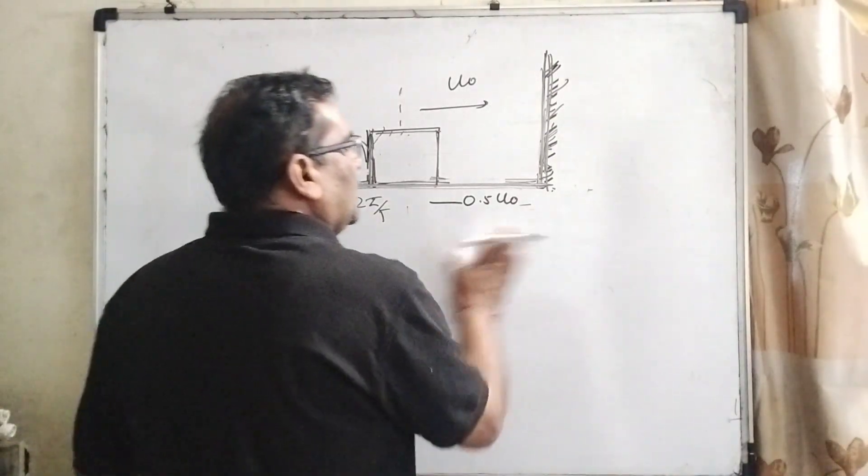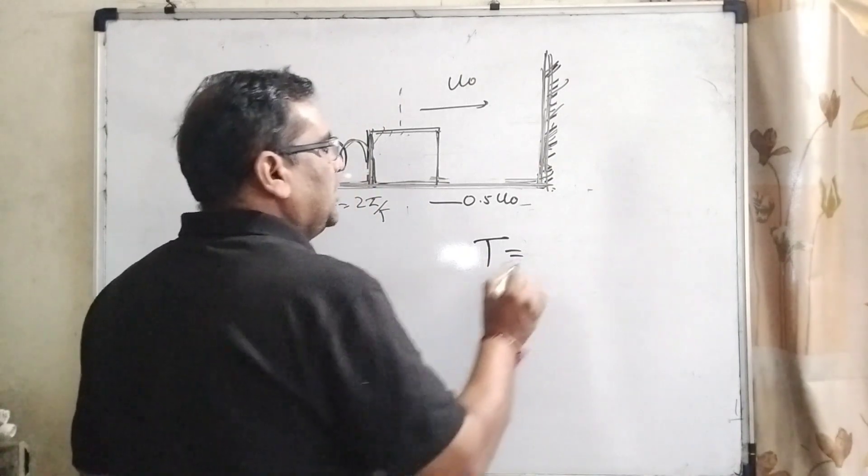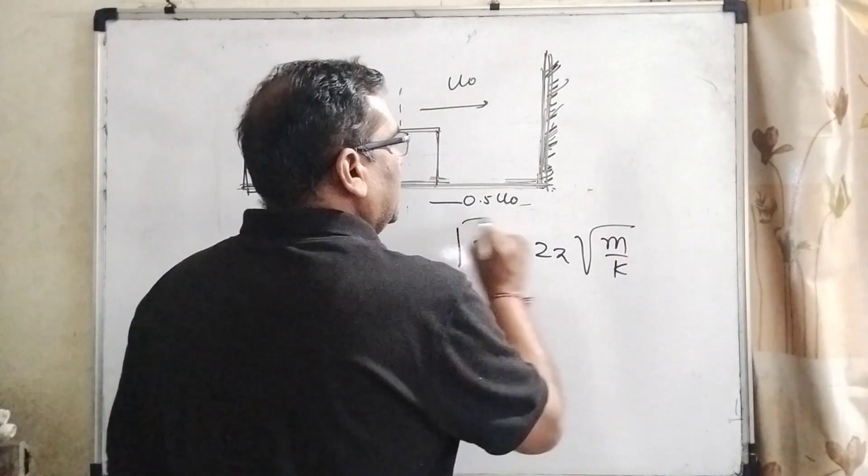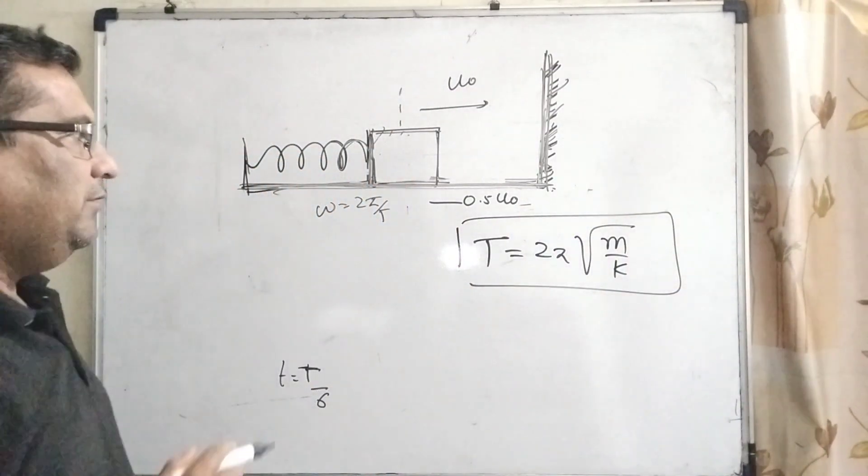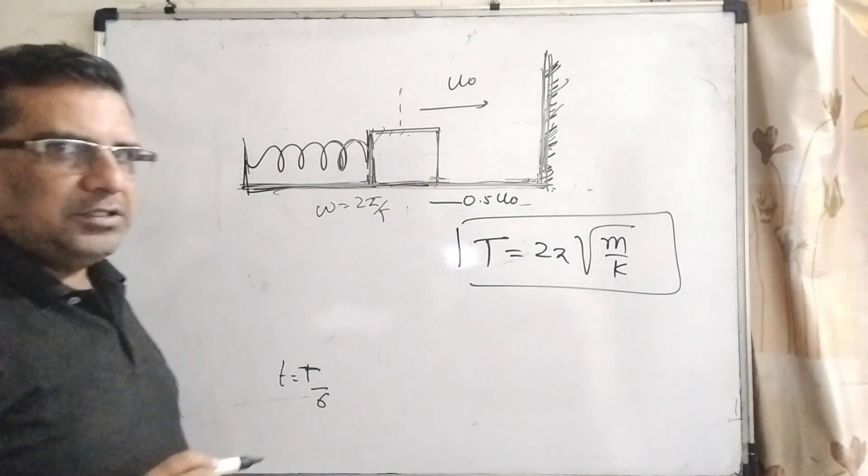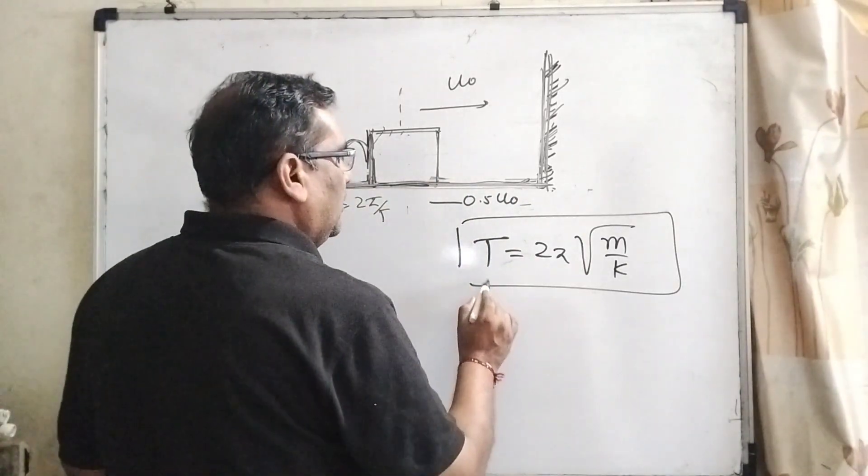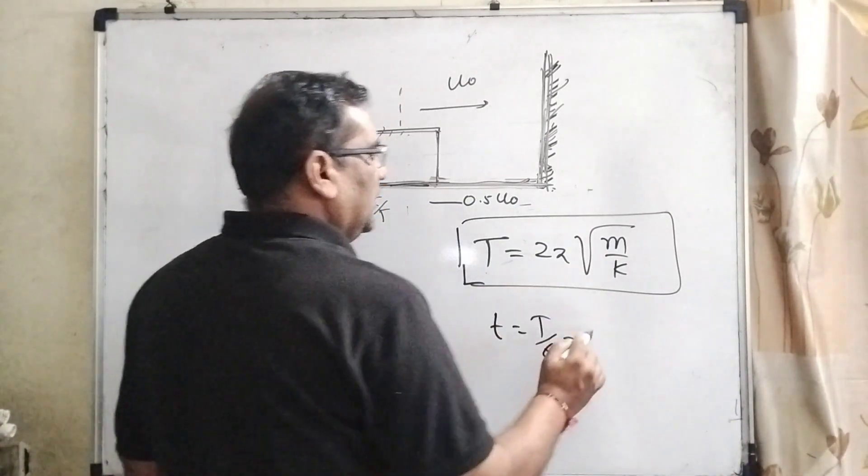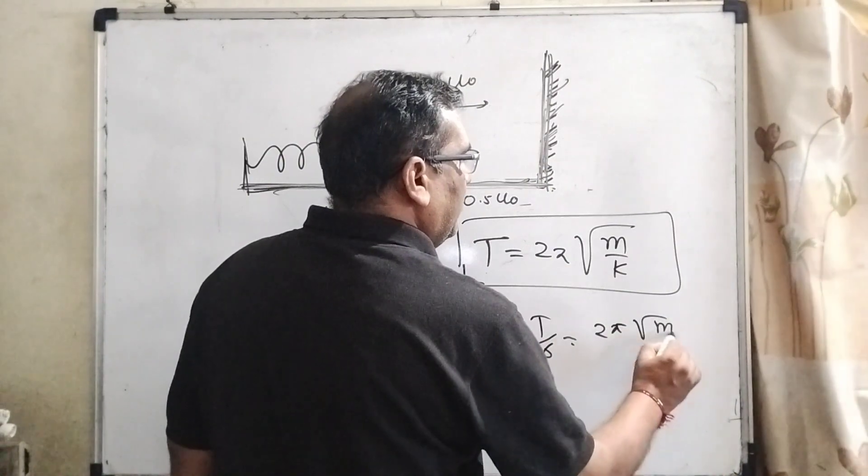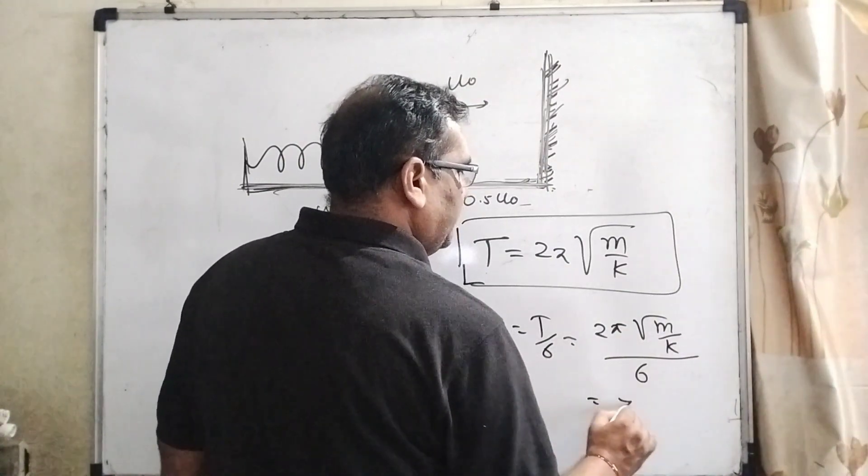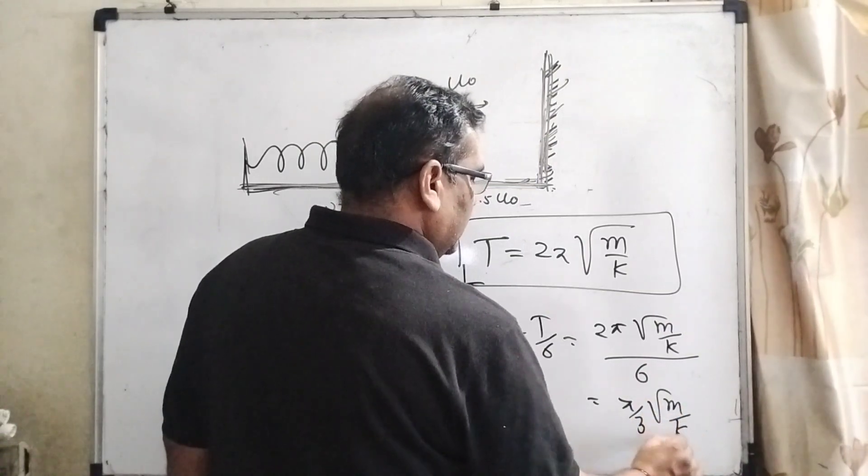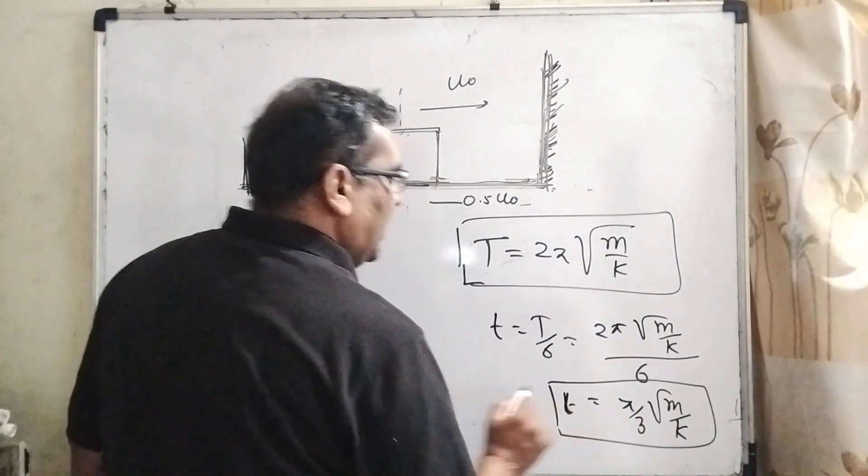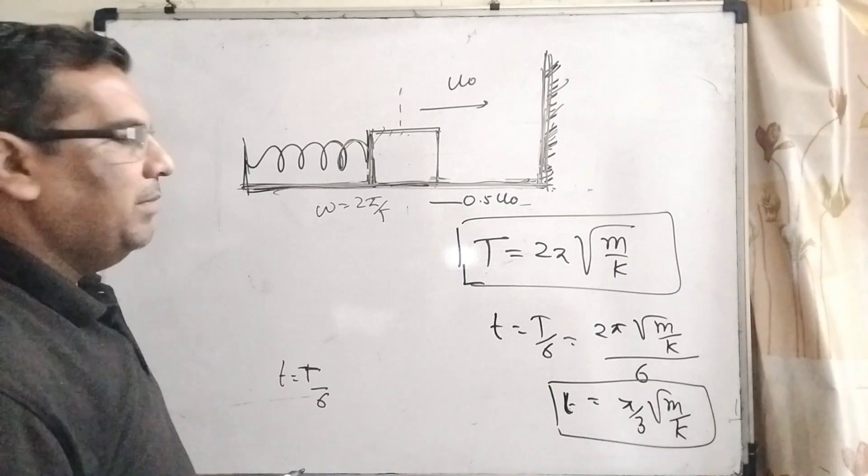As we know that the time period for oscillatory motion is T equal to 2 pi root m by k. This is the equation for oscillatory motion when using a spring. Here we have got small t equal to capital T by 6. So therefore, t equals 2 pi root m by k divided by 6, which means pi by 3 root m by k. This is the time period when it is striking.